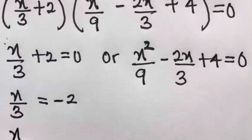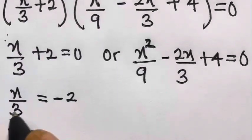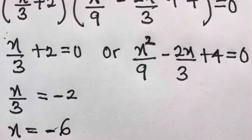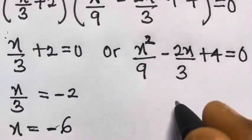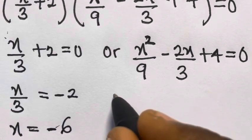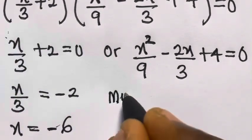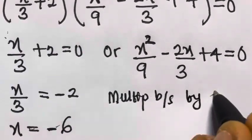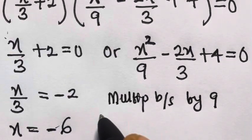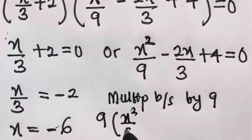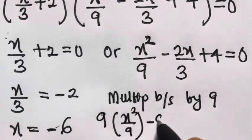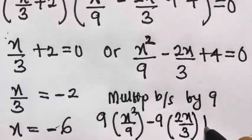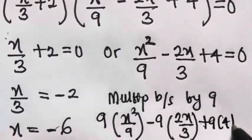From x divided by 3 plus 2 equals 0, we get x divided by 3 equals minus 2, so x equals minus 6. For the quadratic factor x squared divided by 9 minus 2x divided by 3 plus 4 equals 0, we multiply both sides by 9 to get x squared minus 6x plus 36 equals 0.